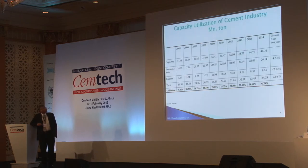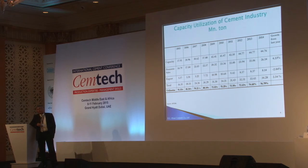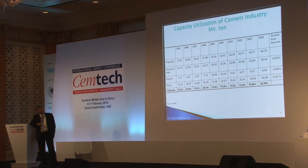Looking at the production capacities of our cement plants, the installed capacity today is 44.76 million tons per year. The capacity utilization is about 76.79% as of year-end 2014. The domestic portion is 26.14 million tons, and export is 8.14 million tons.